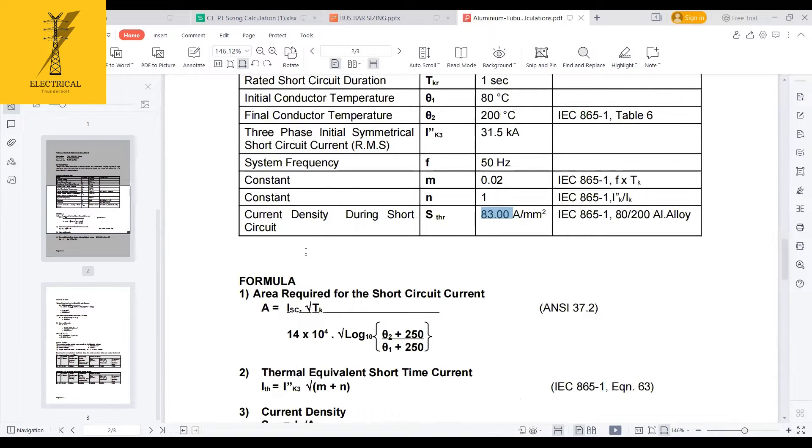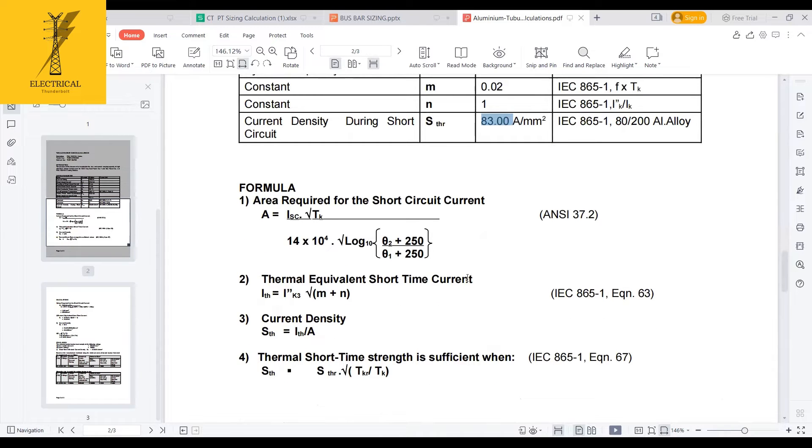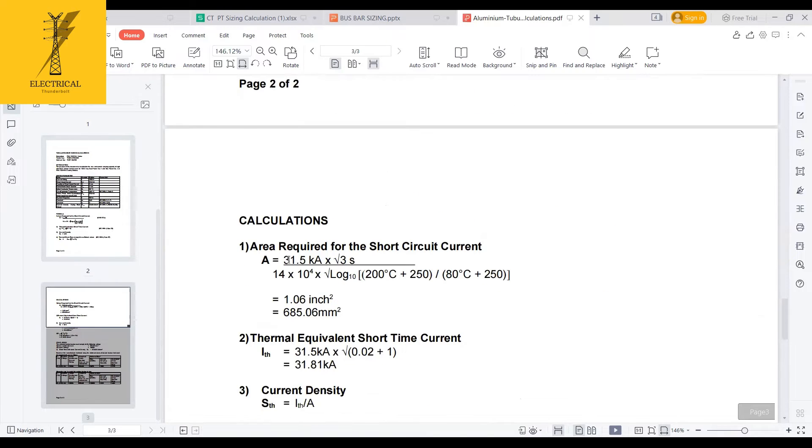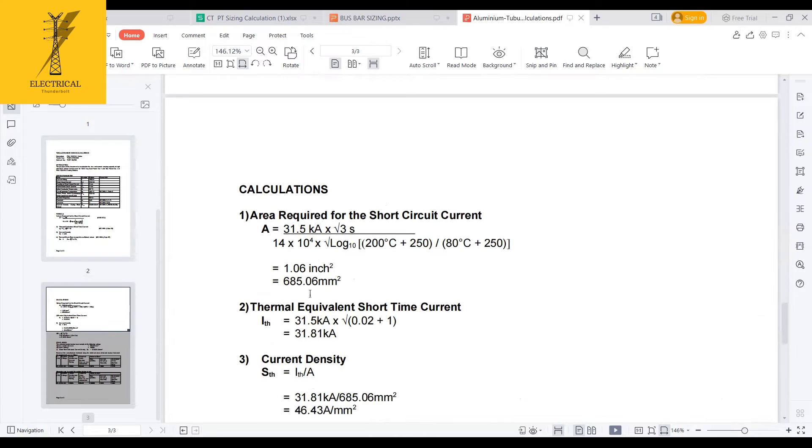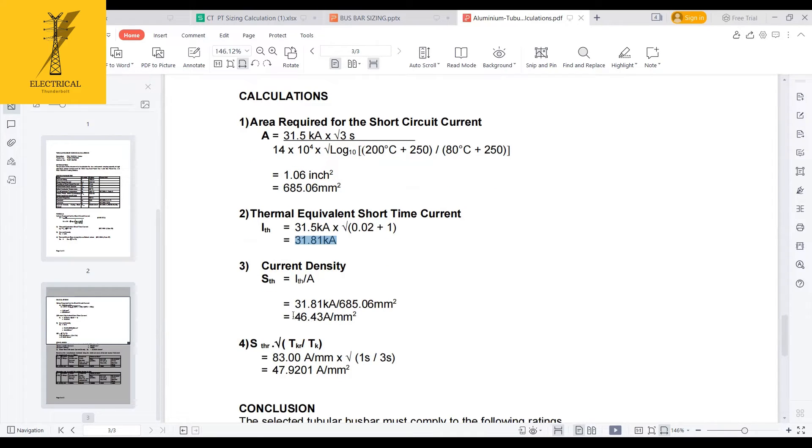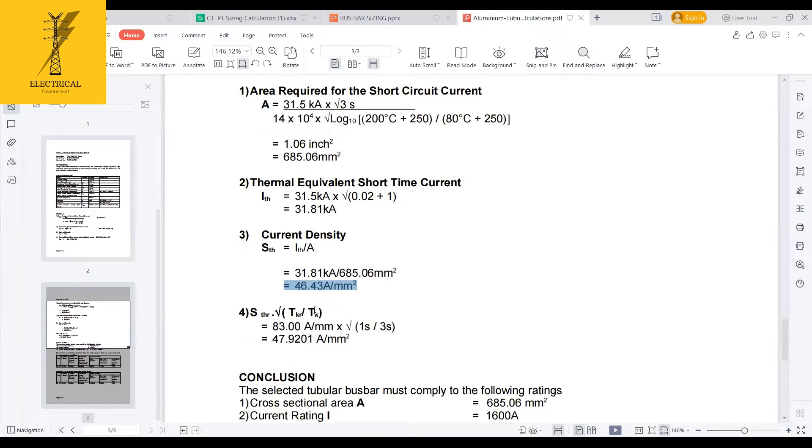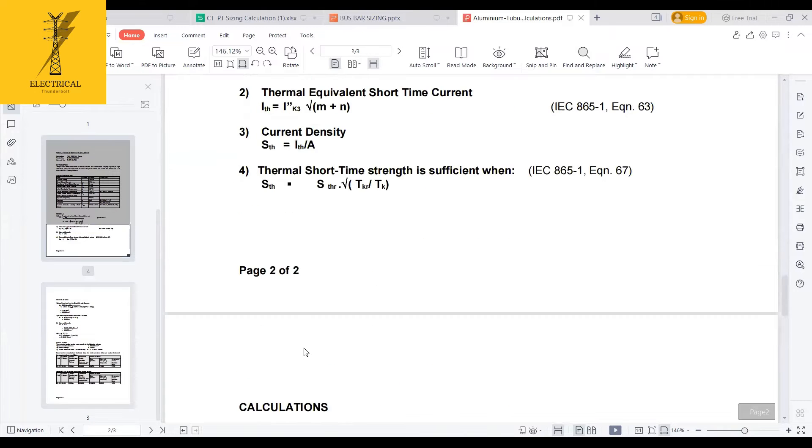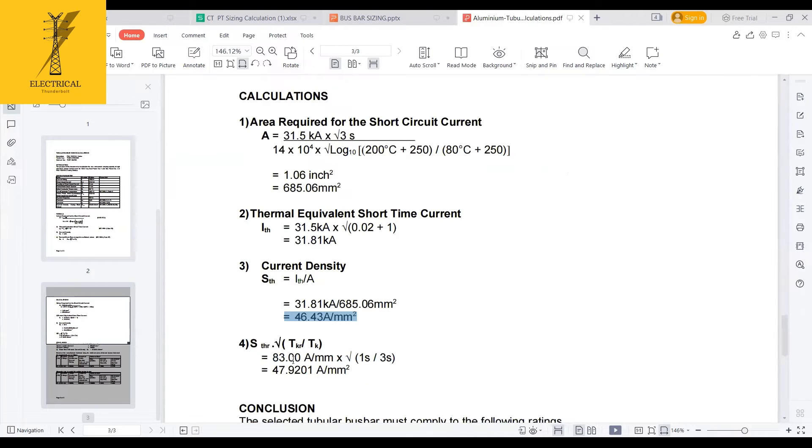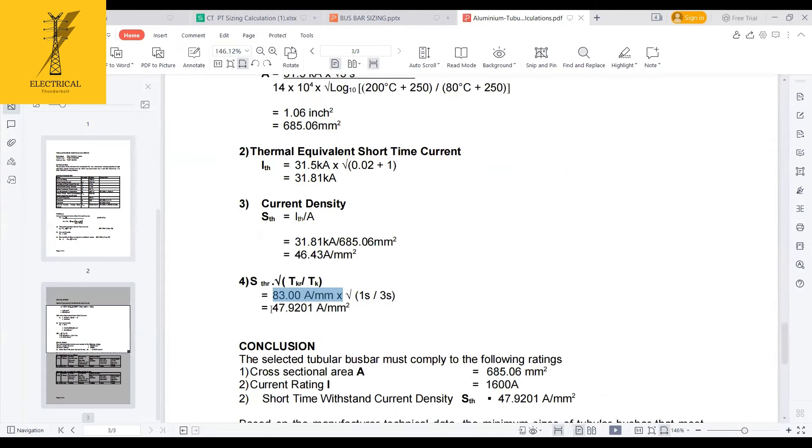Now I am calculating the area required for short circuit current and thermal equivalent short circuit current, current density. Let me see if thermal short time strength is sufficient. Now let's see, I am calculating the area required. So here I require 685.6 mm square minimum conductor, aluminum conductor. And thermal equivalent short term current I calculated, which is 31.81. And 31.81 divided by this will give me the current density, which is 46.